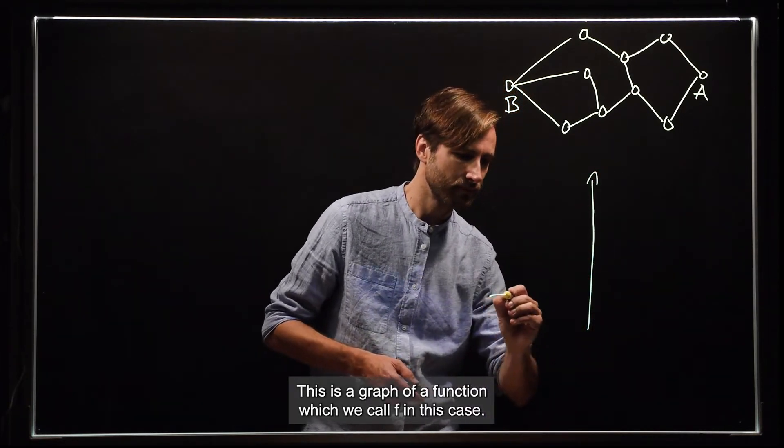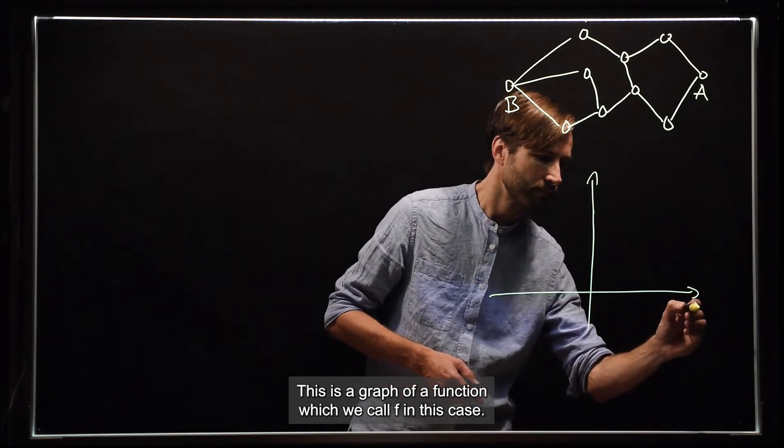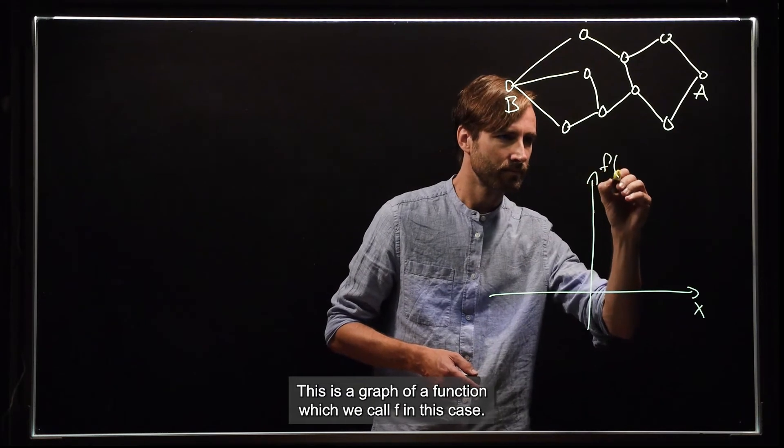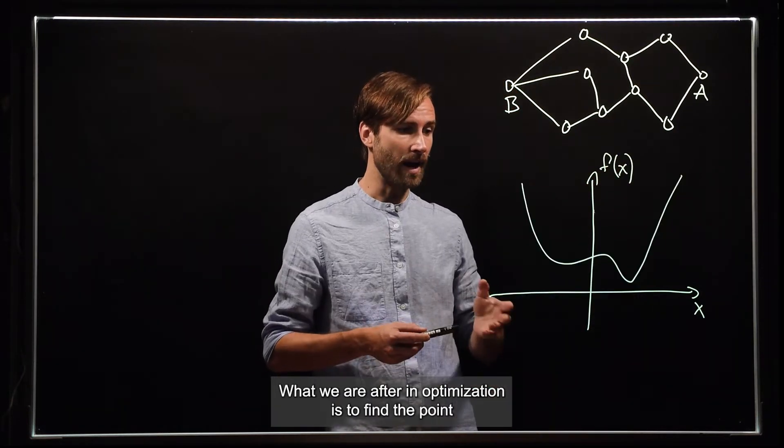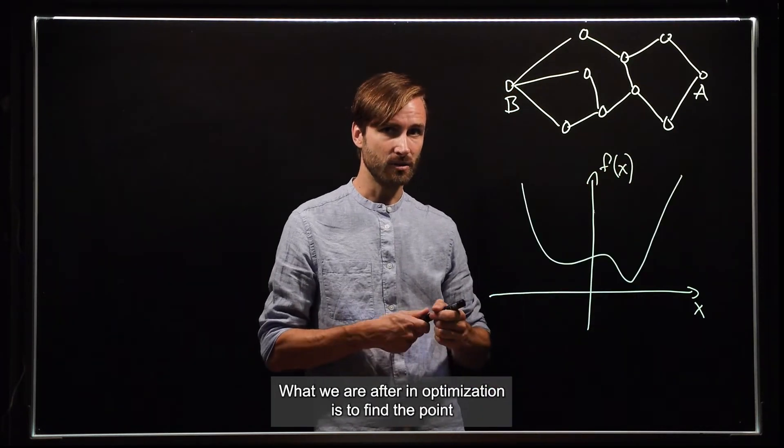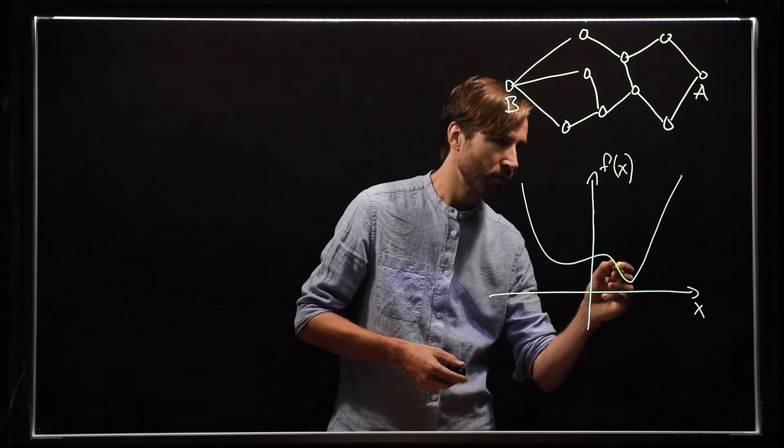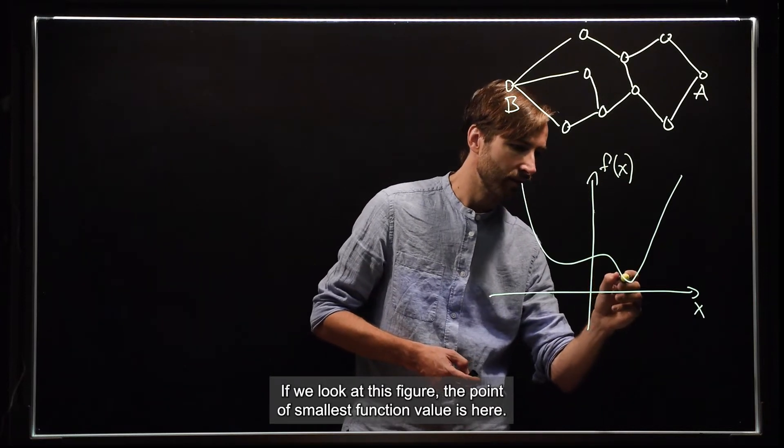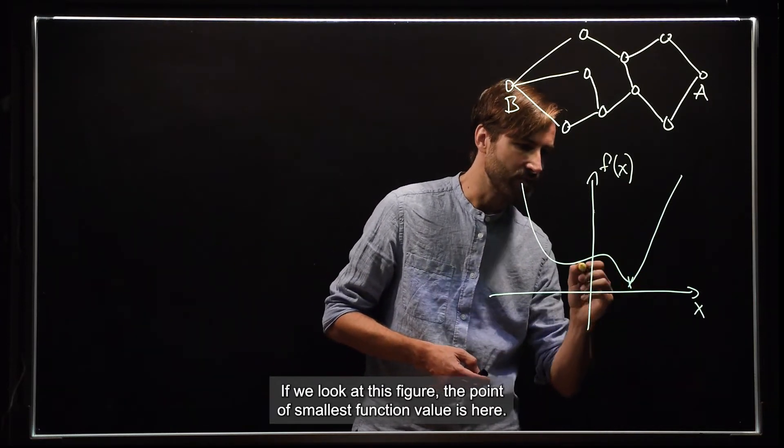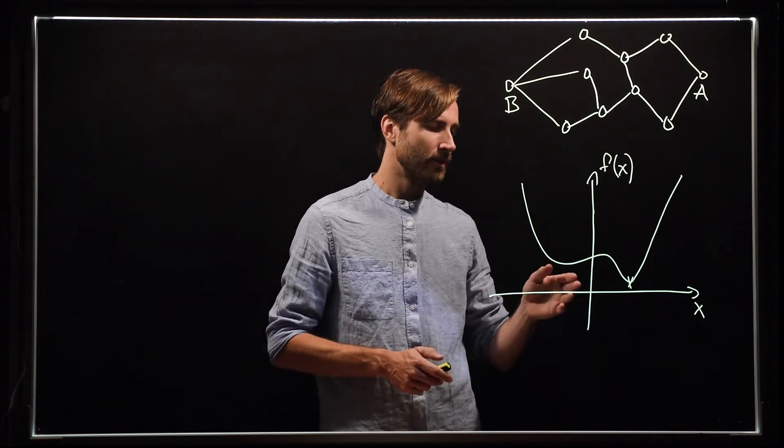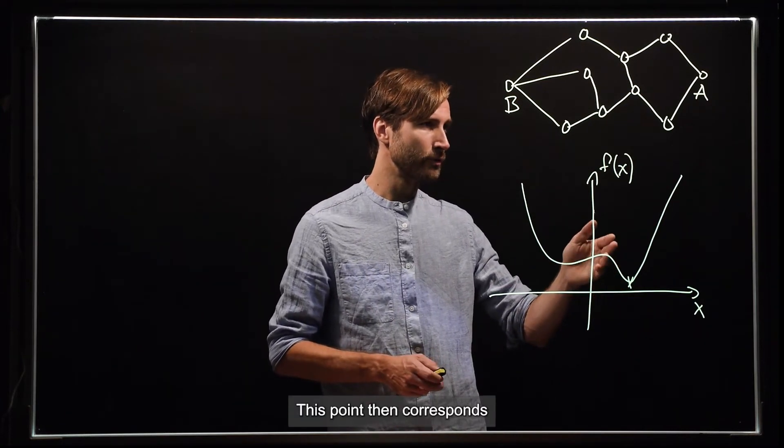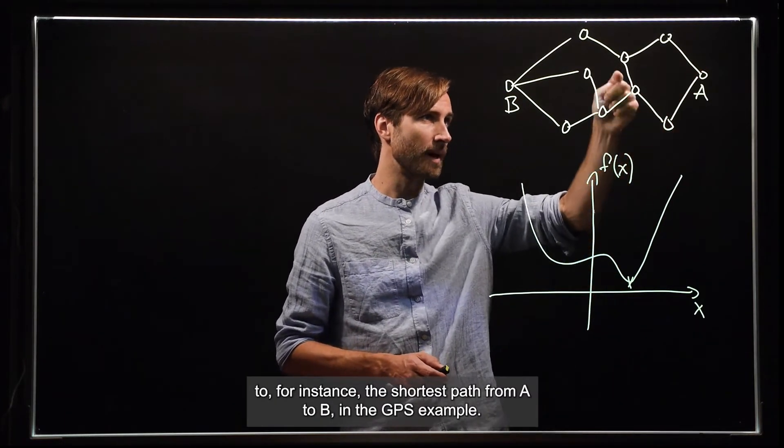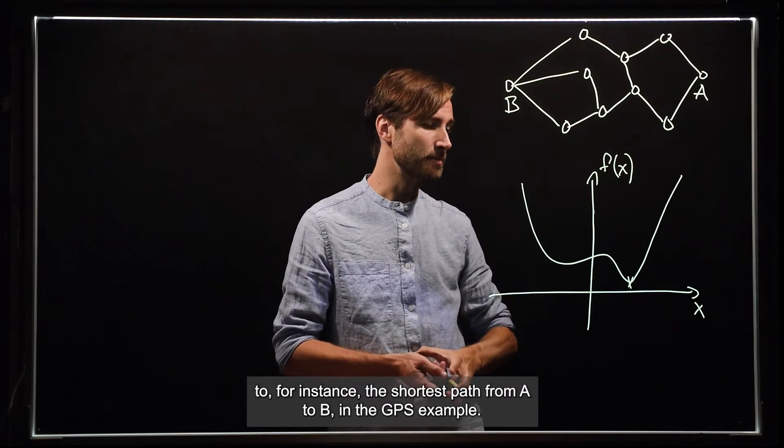This is a graph of a function, which we call F in this case. And what we are after in optimization is to find the point that has the smallest function value. So if we look at this figure, the point of smallest function value is here. This point then corresponds to, for instance, the shortest path from A to B in a GPS example.